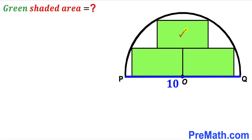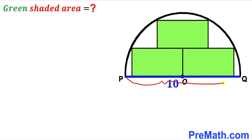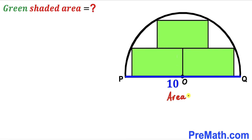In this video we have got three identical green shaded rectangles fully inscribed in a semicircle with center O. As you can see in the given diagram, PQ is the diameter of this semicircle and the diameter is 10 units. Our task is to calculate the area of the green shaded region — in other words, the combined area of all three green shaded rectangles.